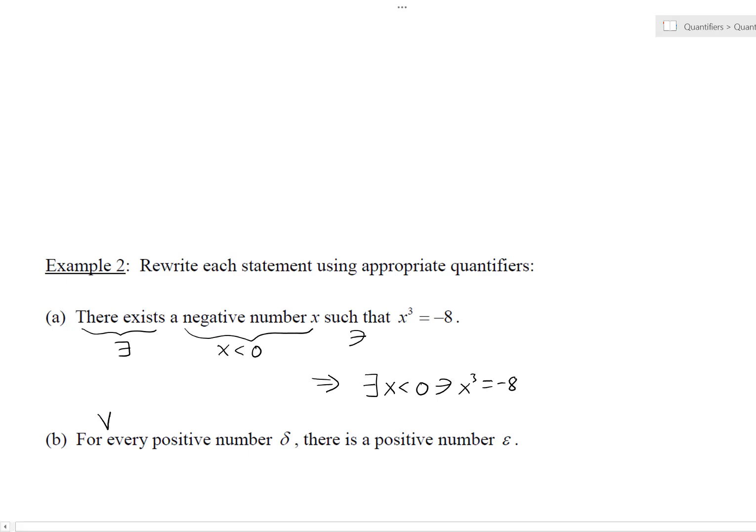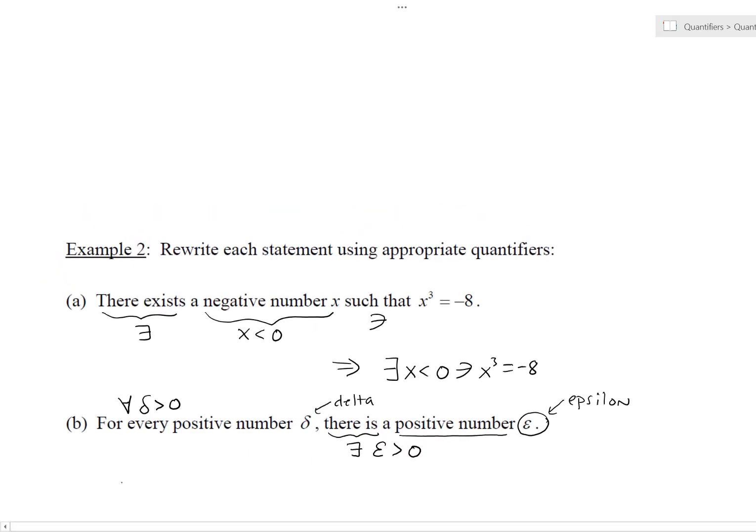How about the next one? For every, that's saying for all, positive number, that's a delta is what we call that. For every positive delta, let me say for every delta bigger than zero, every positive delta, there is, that's just like there exists. There exists a positive number, this thing right here, that's epsilon. So there exists a positive number epsilon, another number bigger than zero. Put it all together, for all delta bigger than zero, every positive delta, there exists an epsilon bigger than zero. And there you go. Two different examples of using quantifiers to write out some statement, in specific, some mathematical statements.